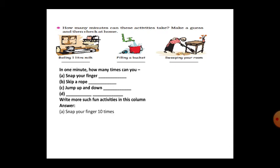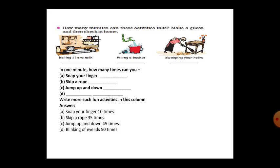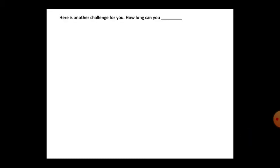Snap fingers — maybe ten times in one minute. Skip a rope and jump in one minute. Blinking eyelids — in reality, it is fifty times you can blink in one minute. You can check that. There is another challenge: how long can you stand on one leg?